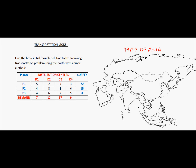Find the basic initial feasible solution to the following transportation problem using the northwest corner method. A company has three plants P1, P2, and P3 which can supply 22, 15, and 8 units per day respectively. It also has four distribution centers D1, D2, D3, and D4 which have a demand of 7, 12, 17, and 9 units per day. These plants must ship material to the distribution centers such that the entire demand is satisfied.